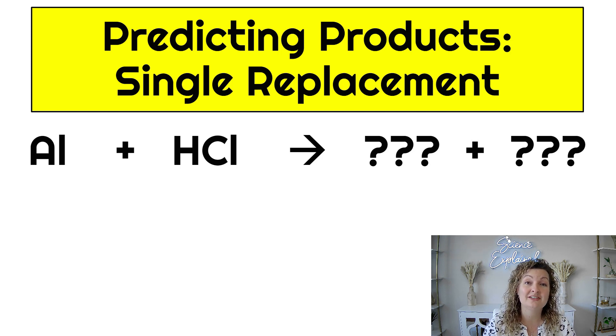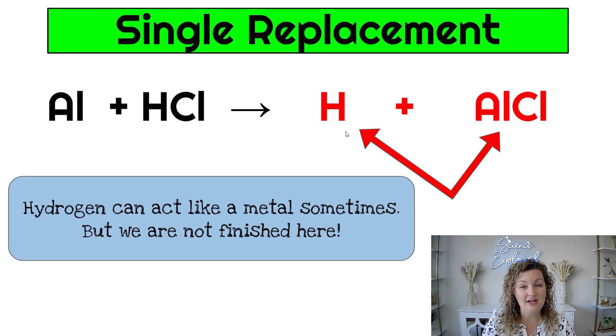So if you're looking at this single replacement, we have aluminum as our standalone element and then we have hydrochloric acid which is our compound and aluminum is a metal. We need to swap it with another metal. However, we don't have one. We have two non-metals. In this case, hydrogen is acting like our metal. So we're going to swap aluminum for hydrogen and so our products become H plus AlCl because it's treating it just like a metal. But we're not done there. That's only step one.